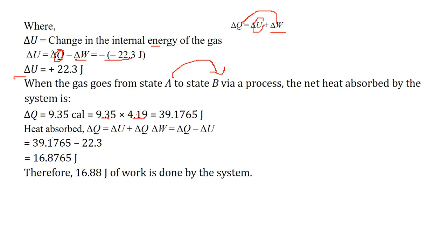9.35 into 4.19 — we multiply to convert calories into joules. From delta Q equals delta U plus delta W, we get delta W equals delta Q minus delta U. Delta U is known as 22.3 joules, delta Q is now the converted calorie value. Subtracting them, we get 16.88 joules. This amount of work is done by the system.